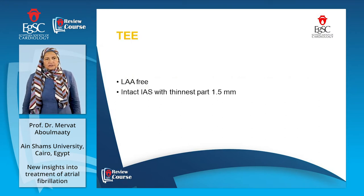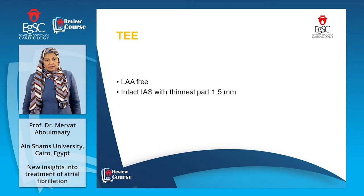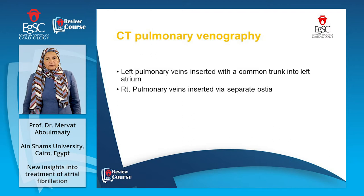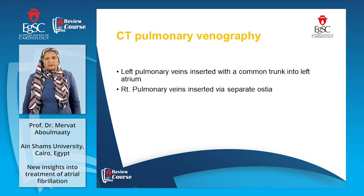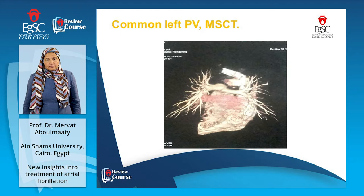Before ablation, we do a TEE in order to check for left atrial appendage thrombus, and sometimes we measure the interatrial septum. CT pulmonary venography is important in cryoballoon in order to check for the anatomy of the veins, the presence of a common vein, the different ostia, and the size of the appendage. This CT image of this patient shows he has a common left-side pulmonary vein and two right-sided veins.